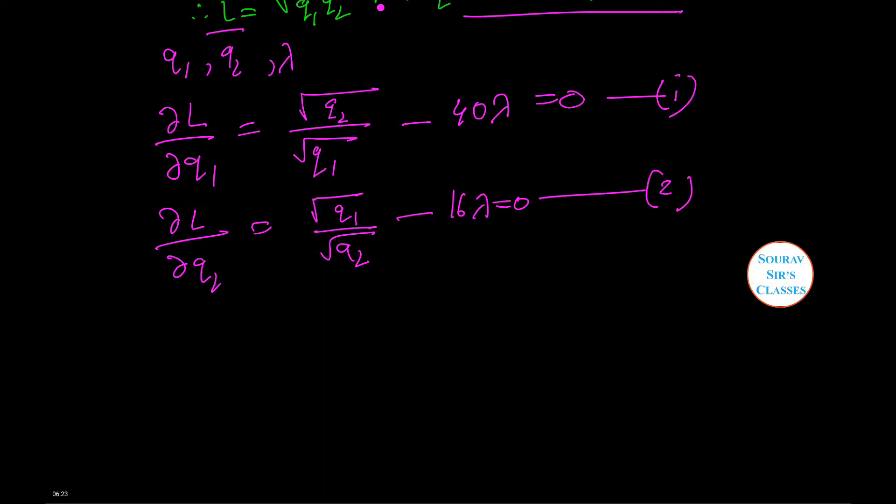dL by d lambda equals 4000 minus 40 Q1 minus 16 Q2 equals 0, which is equation 3.